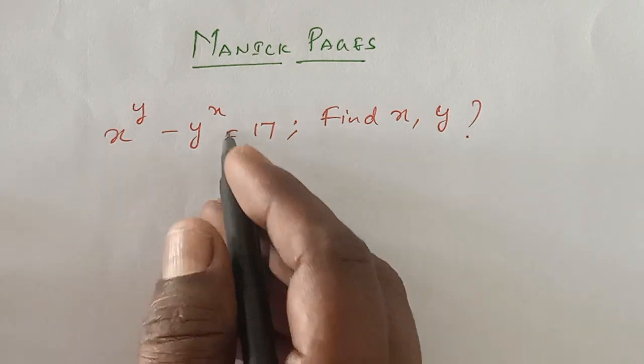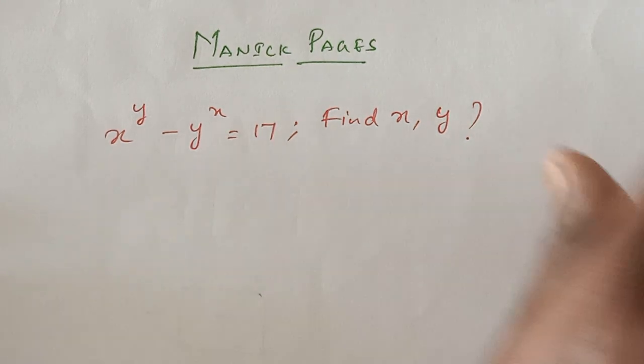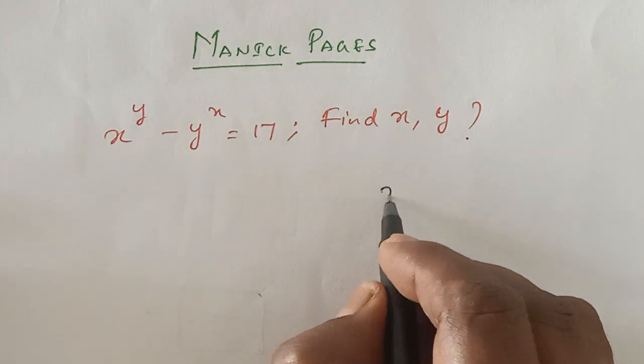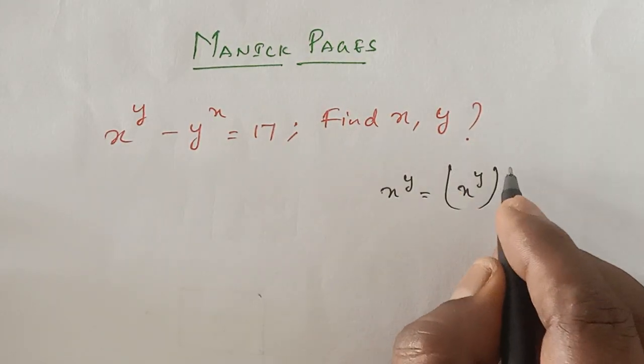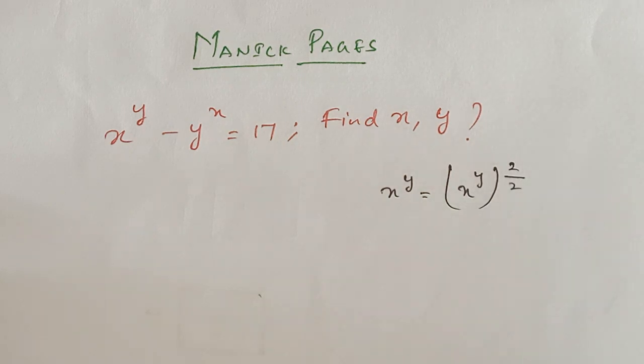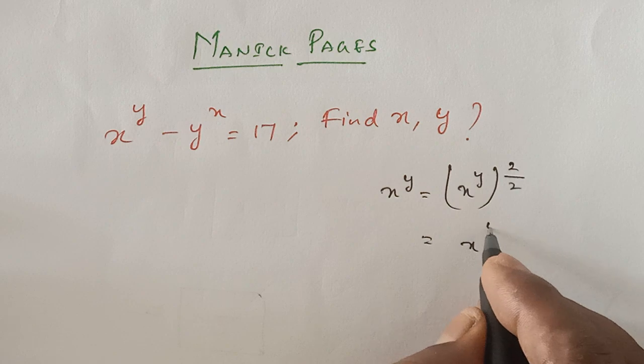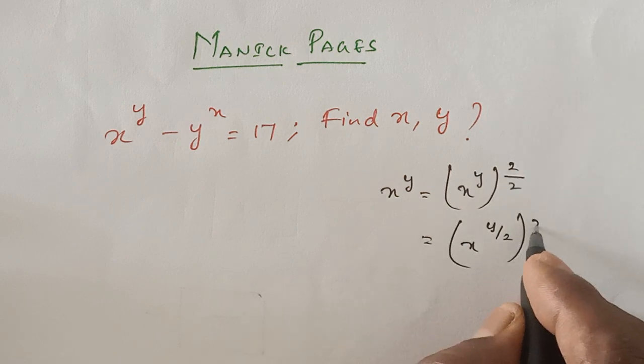So here, I am writing x^y, which is equal to x^y times 2/2. This I can write like (x^(y/2))^2.